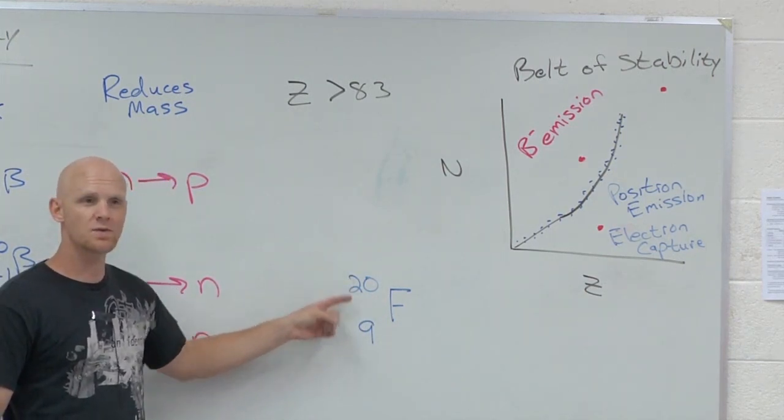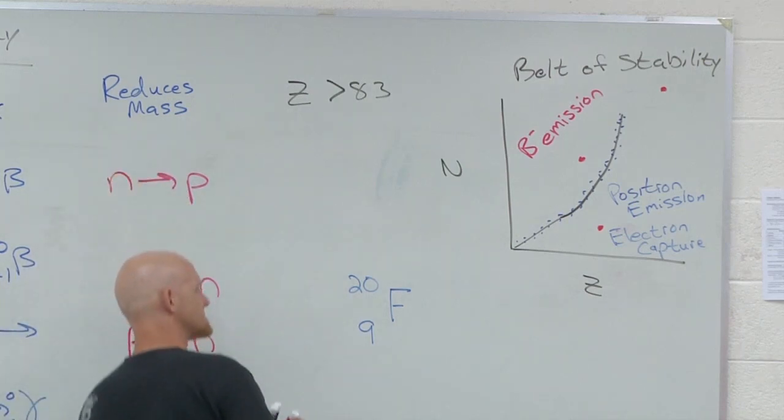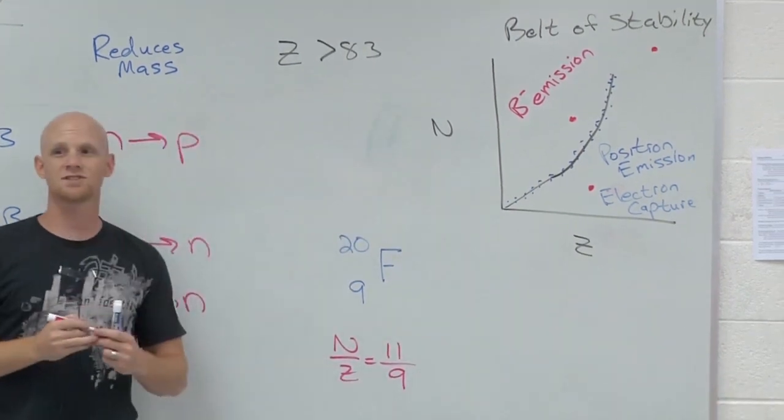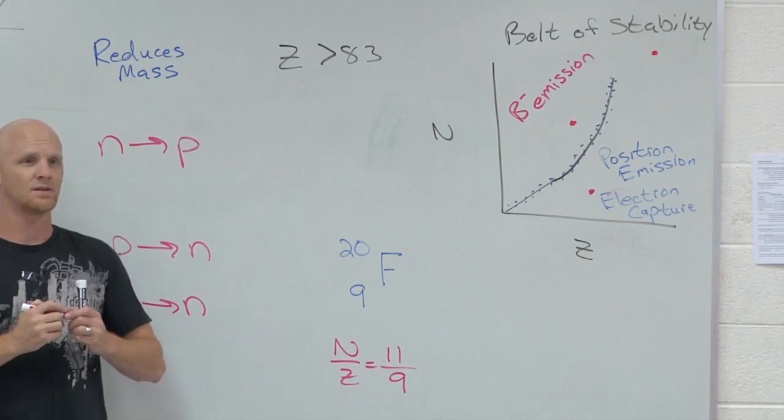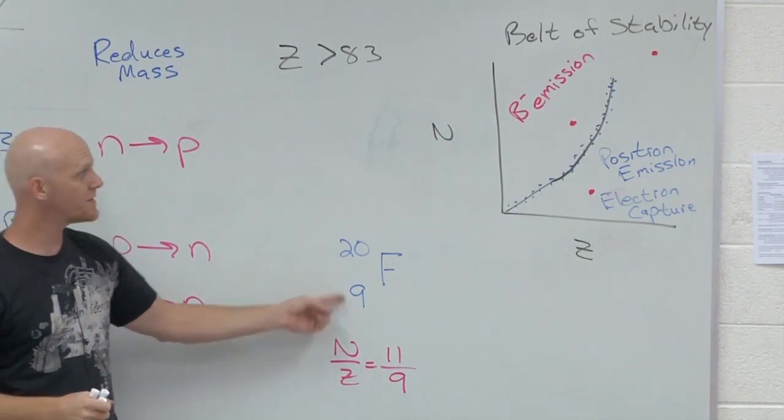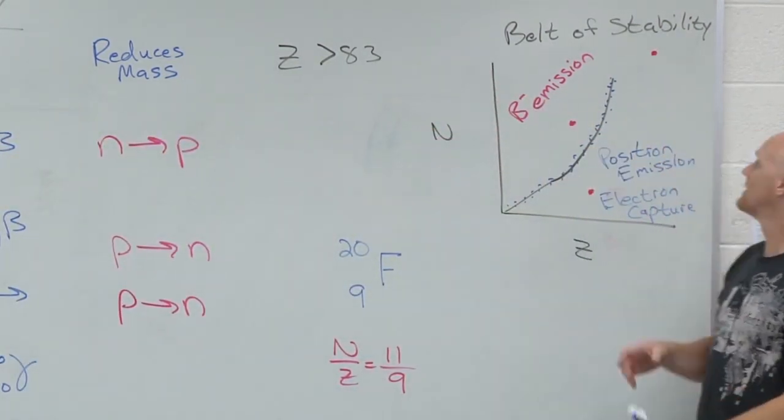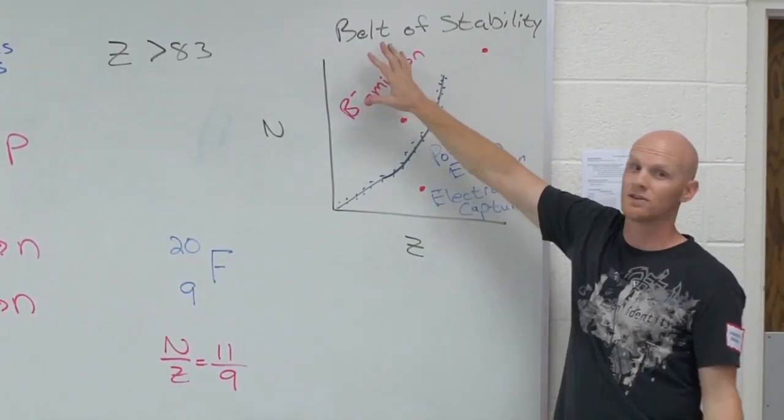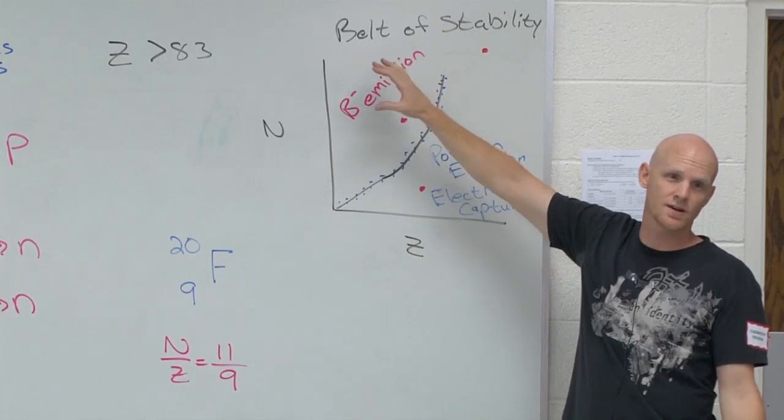But it's all based on the n over z ratio. How many neutrons does he have? Eleven, and how many protons? Nine. What n over z ratio does he want? One to one. Where on the belt of stability is he? Above the belt. He's up here. He's got too many neutrons and not enough protons. He's above the belt. So based on what we just talked about, what should he want to do anyways? Beta.